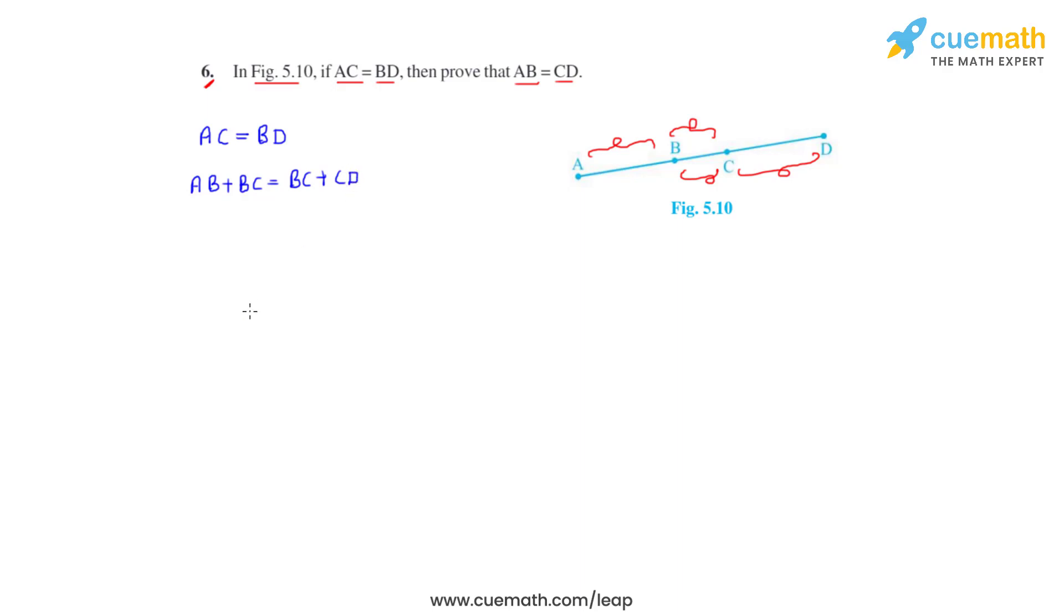Now point B lies between A and C as can be seen in the figure, and C lies between point B and D. Now what we can do is subtract BC from both sides.